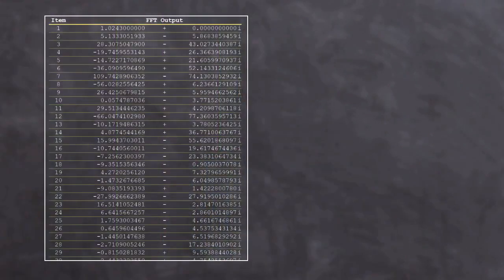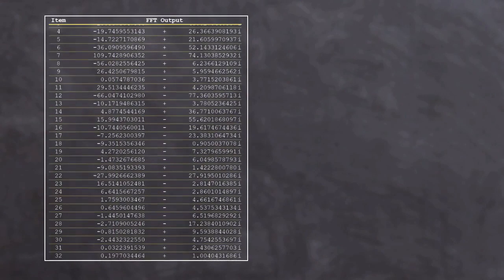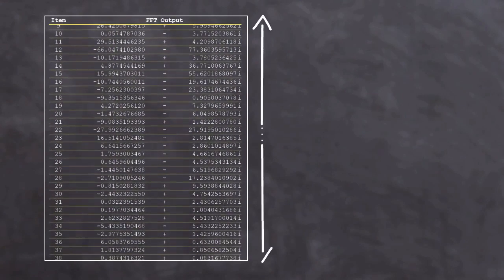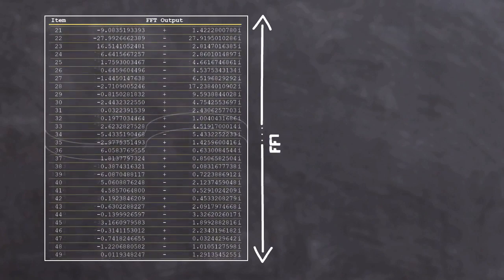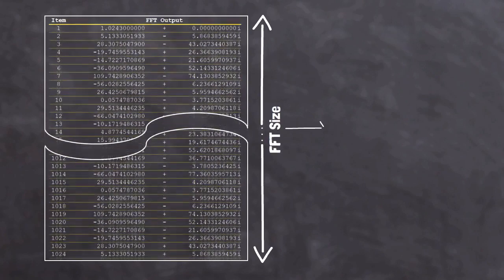If you have ever run a Fast Fourier Transform, you will notice that the number of items in the list of results is exactly the same as the FFT size. Let's call this number n. So it is only going to test n different sinusoids.